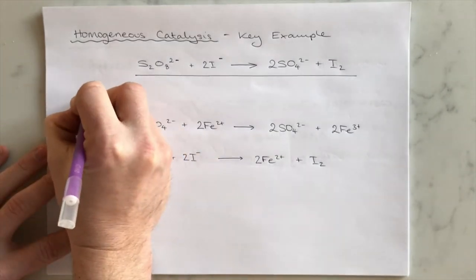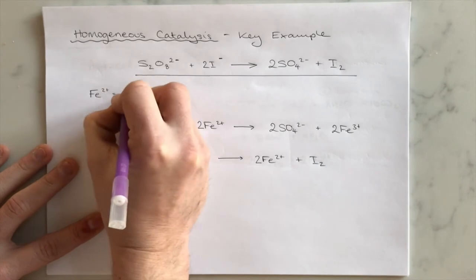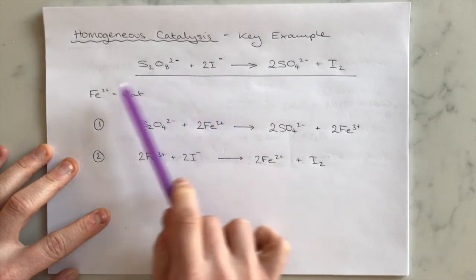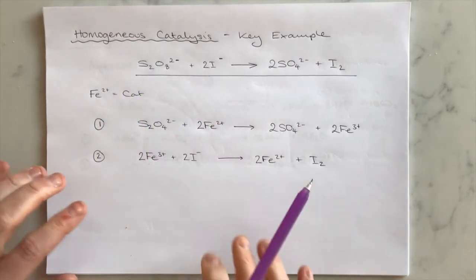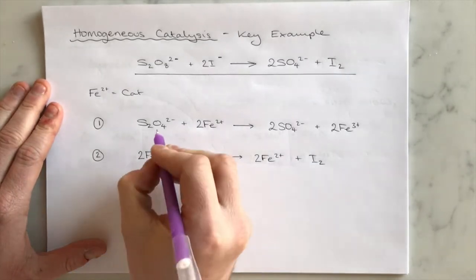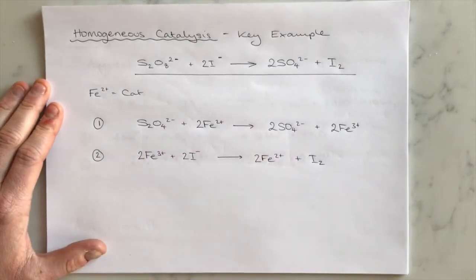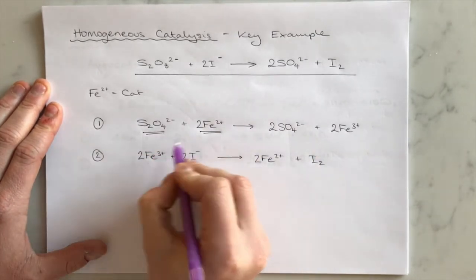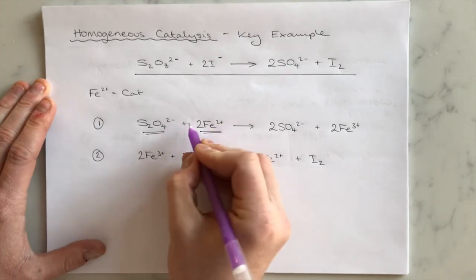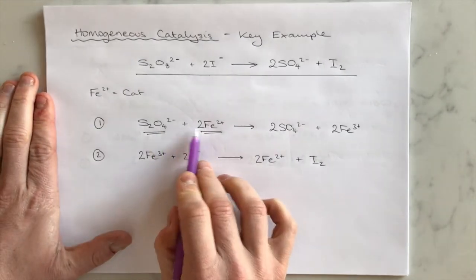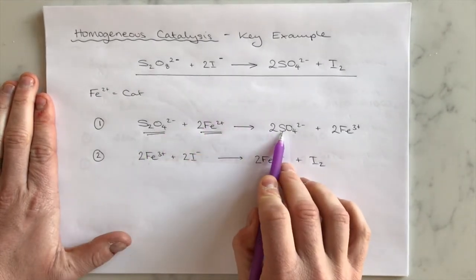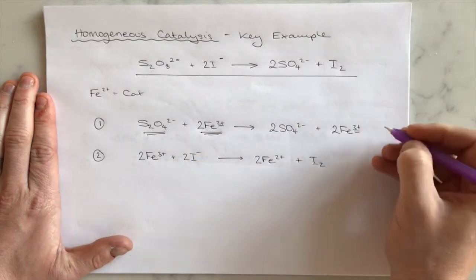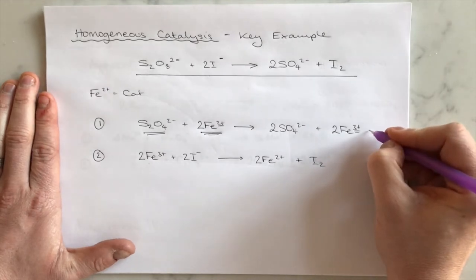Iron(II) ions, Fe²⁺, act as the catalyst in this reaction. The reason it's homogeneous is because all species are ions in the aqueous phase — this is a solution phase reaction. The first step is where the Fe²⁺ ions react with the peroxidisulfate anion. Now we're reacting a positive ion with a negative ion, so they attract each other much more quickly. In this first step, the peroxidisulfate anion turns into two sulfate ions and our iron gets oxidised from Fe²⁺ to Fe³⁺. That's the halfway step in our reaction.